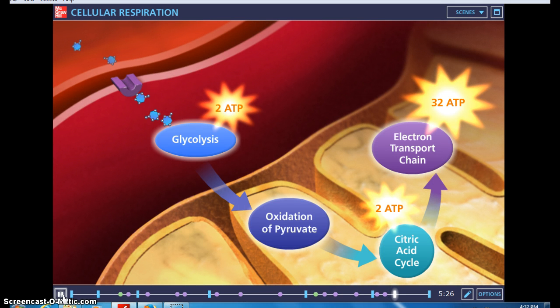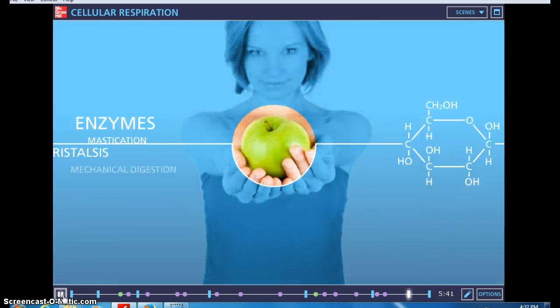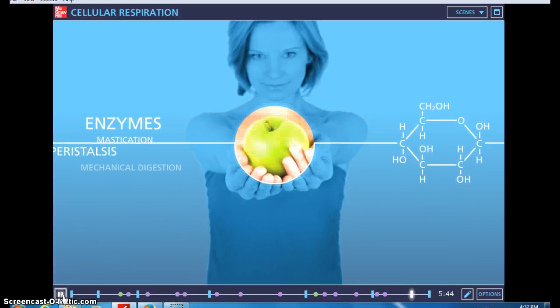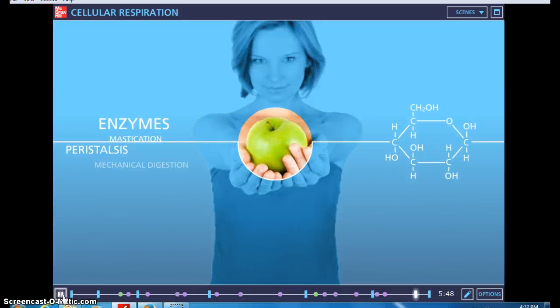In the process of producing ATP, oxygen is brought in from the bloodstream to be the final electron acceptor in the electron transport chain. And the carbon dioxide that is produced as a byproduct is released. The goal of cellular respiration is to transfer the energy from the food that we eat daily into ATP that our bodies can use.